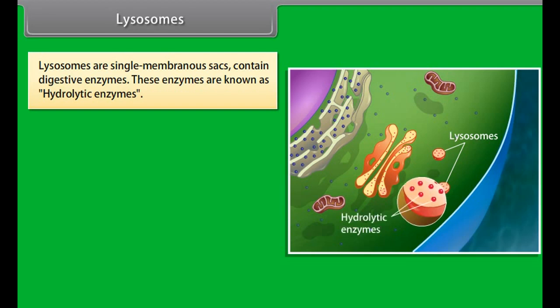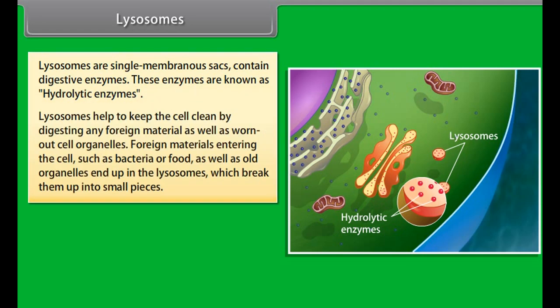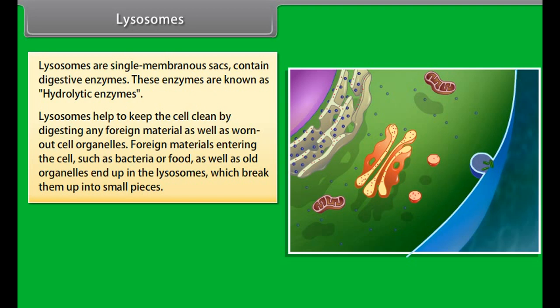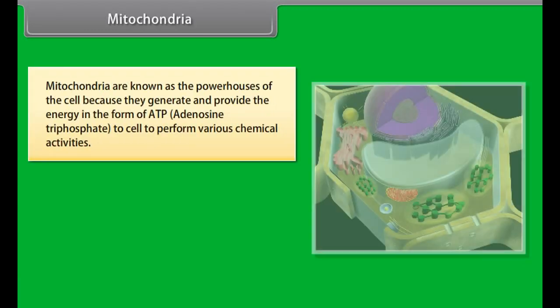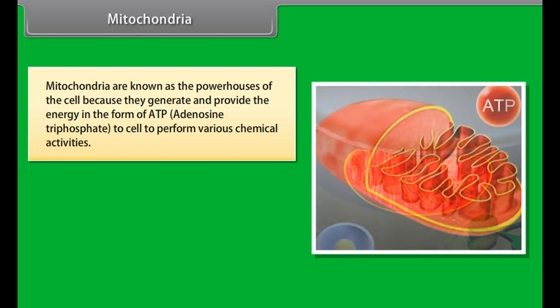The Golgi apparatus was first discovered by Camilo Golgi. It consists of a system of membrane bound vesicles arranged parallel to each other in stacks called cisterns. These cisterns are attached to the membranes of the endoplasmic reticulum. It dispatches the packaged material to various targets inside and outside the cell. Its functions include the storage, modification and packaging of products in vesicles, and it also involves in the formation of lysosomes.